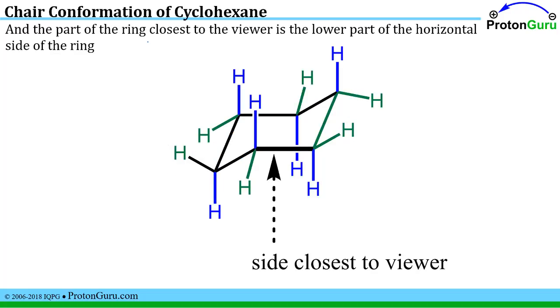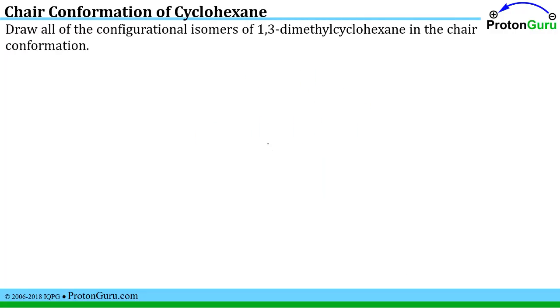The question also asks us which part of the ring is closest to the viewer and that's this lower part of the horizontal side of the ring. We need to know that to understand fully the shape of the cyclohexane chair conformation. And having this understanding of the shape we can now do a bunch of different types of problems involving our knowledge of the chair conformation.